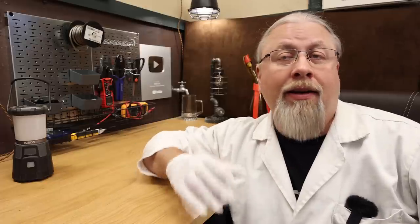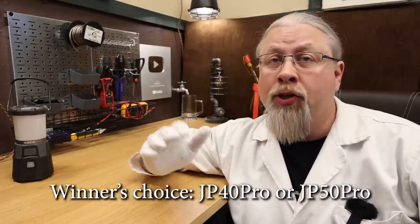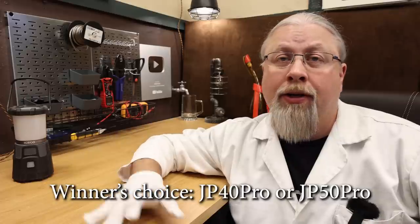So what size fridge are they giving away? That's going to be up to the winner. Iceco said the winner can choose between the JP 40 Pro or the JP 50 Pro. The 40 liter is 18 by 14 by 29 inches, and the 50 liter is three inches taller. So you can choose what's right for you.